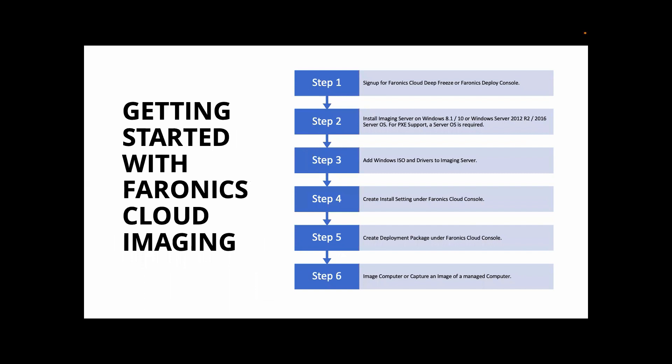Just to recap on the steps involved to get started with Varonix Cloud imaging. Firstly, sign up for Varonix Cloud Deep Freeze, then install the imaging server. Step three is to add the Windows ISO and the drivers to the imaging server. Then create your install settings under the Varonix Cloud console, and then your deployment package or deployment packages if you have many, and then image the computer. Or you can just capture an image of an existing managed computer and push it out to other machines.